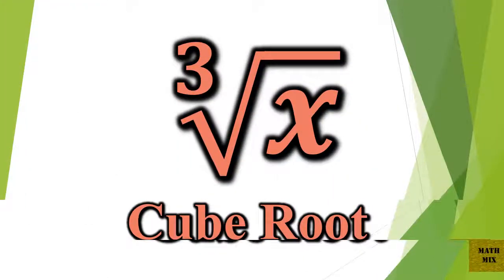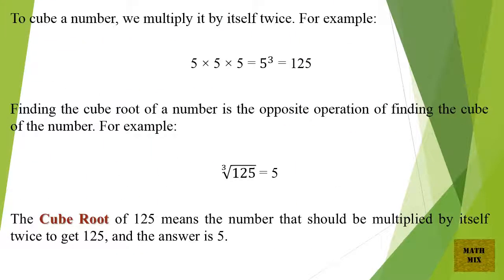The cube root. To cube a number, we multiply it by itself twice. For example, 5 times 5 times 5 equals 5 cubed, which equals 125.